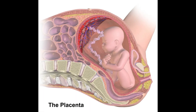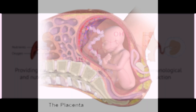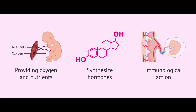The placenta develops to support the growing embryo. Its functions include nutrient and oxygen transfer from mother to fetus, waste removal from fetal blood, and hormone production — including estrogen, progesterone, and HCG — which help maintain pregnancy.